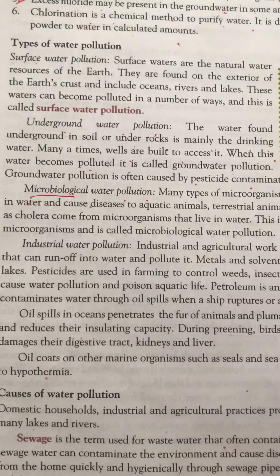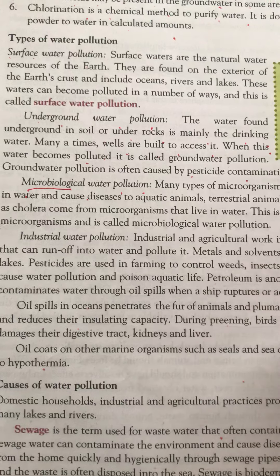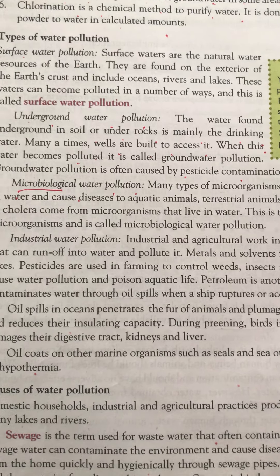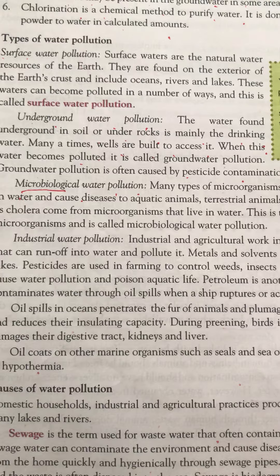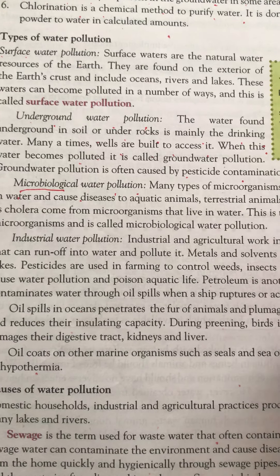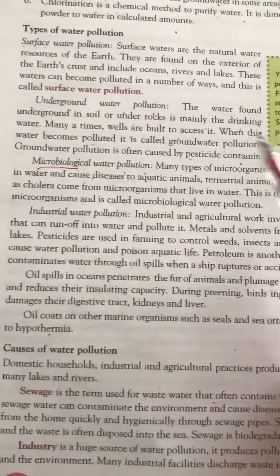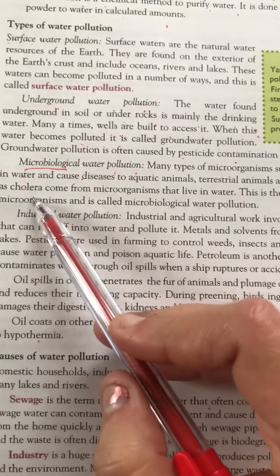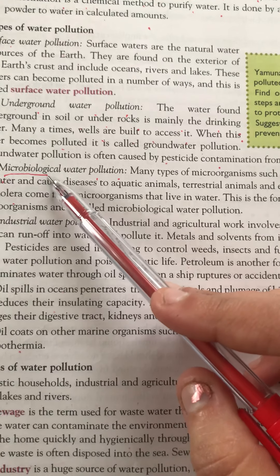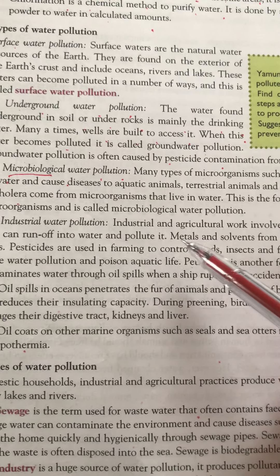The third type is microbiological water pollution. When microorganisms are present in the water and cause diseases, that water is known as contaminated or polluted water. This can cause many diseases such as cholera — these are microbiological diseases caused by microorganisms.